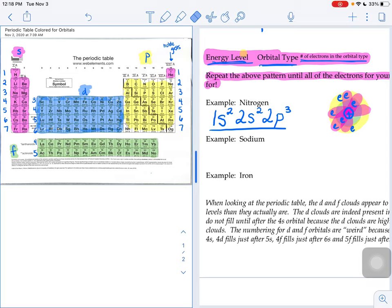So we've done one electron configuration for nitrogen. Now we're going to try and do the same thing for sodium.